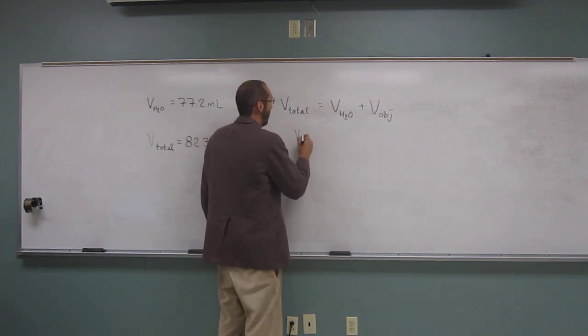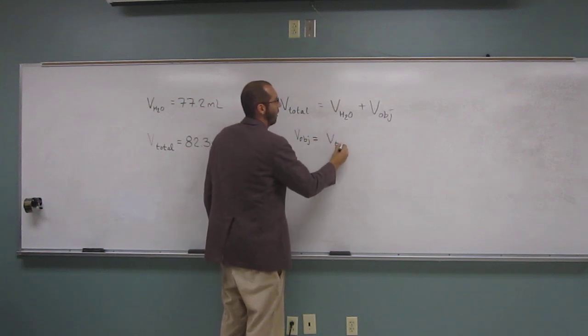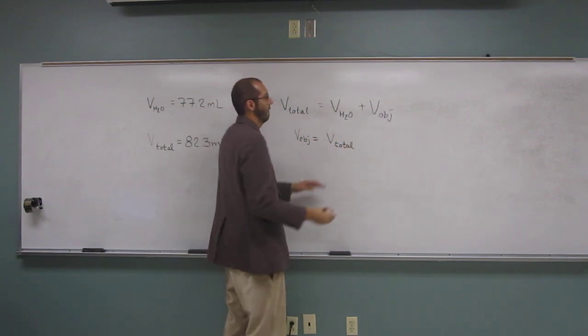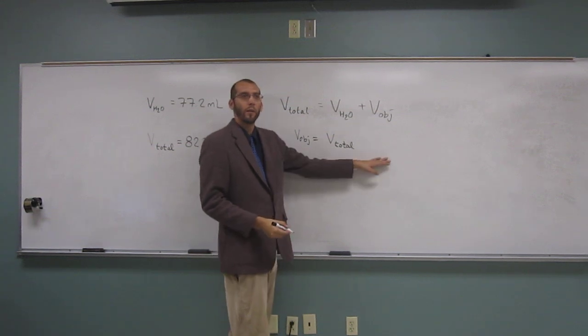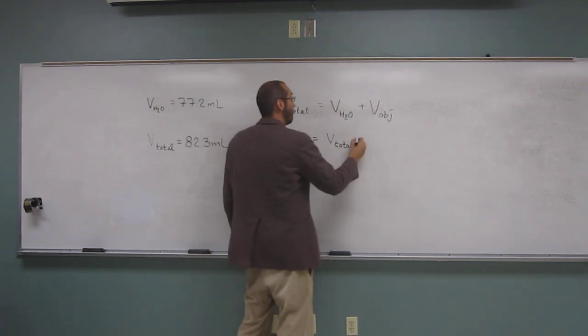So, what would it be? The volume of the object is going to be what? Volume total. We've got to rearrange the equation first. Then what? Minus volume of the water. Minus the volume of the water.